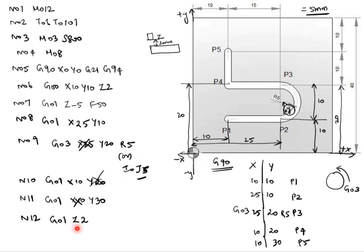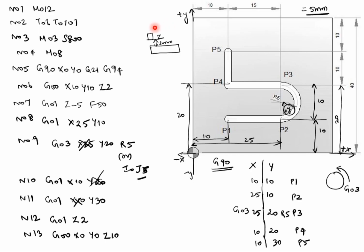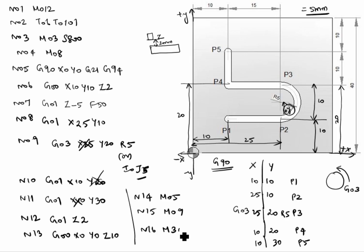N13: G00 X0 Y0 Z10 — this is rapid mode; X0, Y0 returns the tool to the origin, and Z10 means the tool is 10mm above the workpiece. N14: M05 — spindle off. N15: M09 — coolant off. N16: M30 — end of the program.